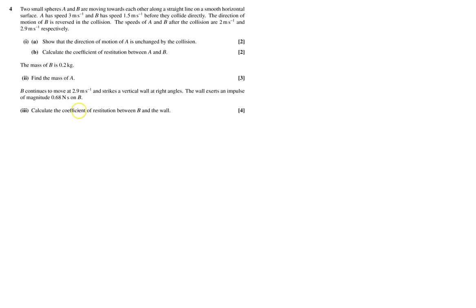Okay, so we've got two small spheres, A and B, and they're moving together towards each other. A is moving at 3 meters per second, and B is moving at 1.5 meters per second.